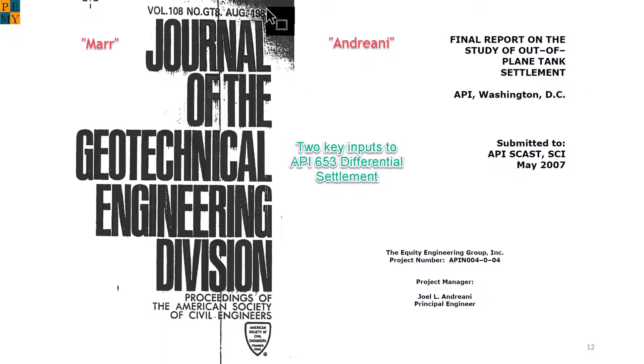At this point, we know that there are two basic methods incorporated into the API 653 settlement analysis. The Marr method is based on curvature. The other method is the Andriani method. Joel Andriani is a committee colleague of mine, and he and his colleagues did extensive FEA studies back in the day to address settlement. The way that API 653 applies these two methods is based on the coefficient of determination, or R-squared, for the data, which, if it is less than 0.9, then instructs the user to use the Andriani method. There's a problem with the R-squared metric, which I'll go into a little bit later.